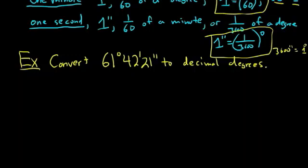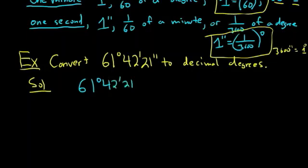So let's go ahead and do it. This is a complete solution. So 61 degrees 42 minutes 21 seconds. We can break this up. We want to convert it to just degrees. So this is 61 degrees